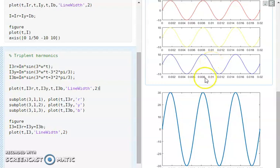So what will happen when I add all the three together and plot it? Here you can see that when I add all the three triplet harmonics together, the net component is three times more than any of the triplet components in R, Y, or B phases. That means the neutral current becomes overloaded.